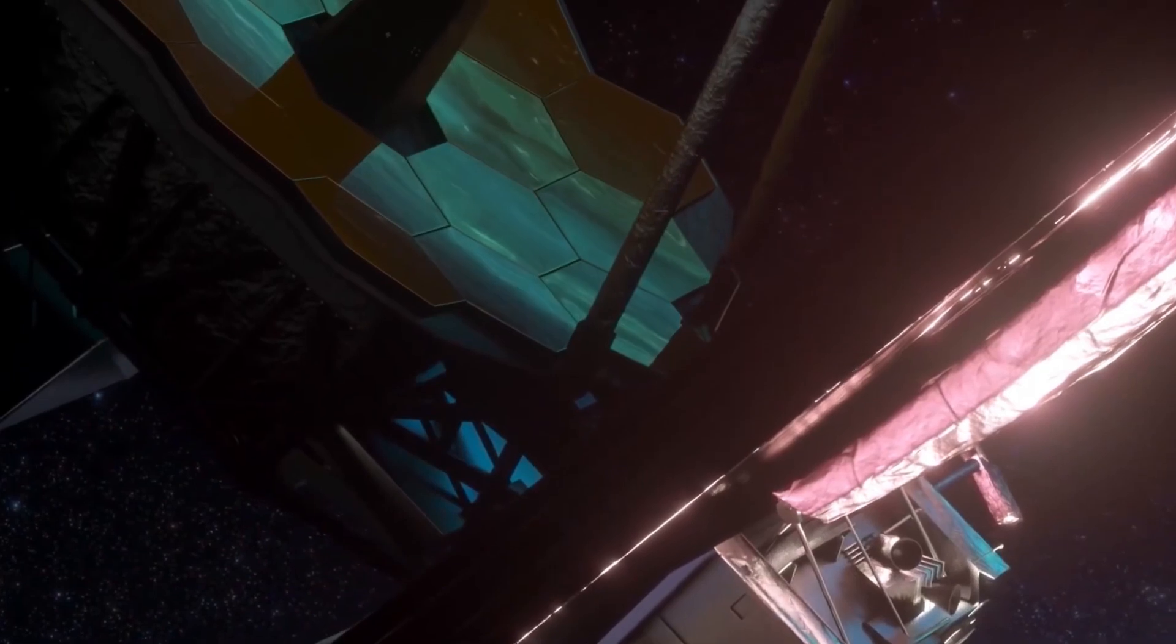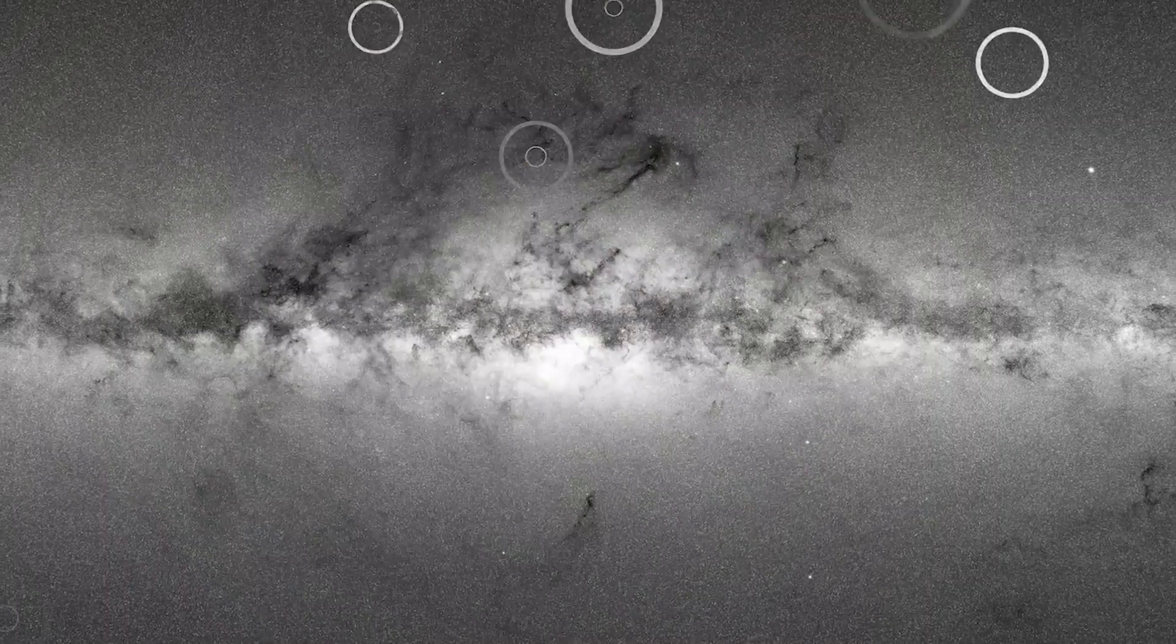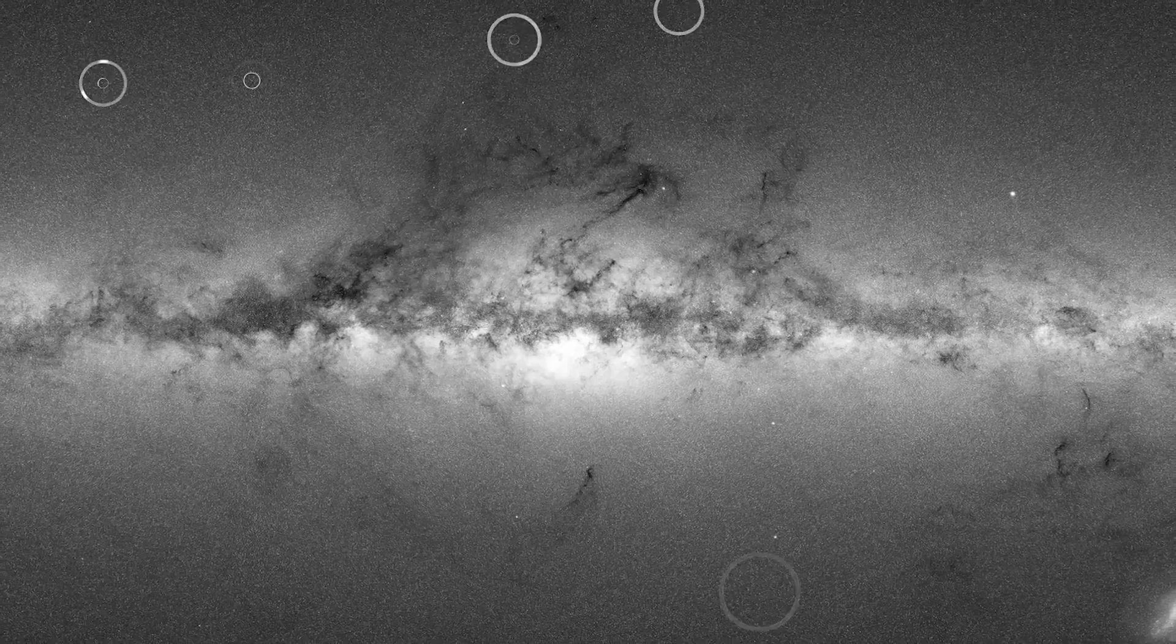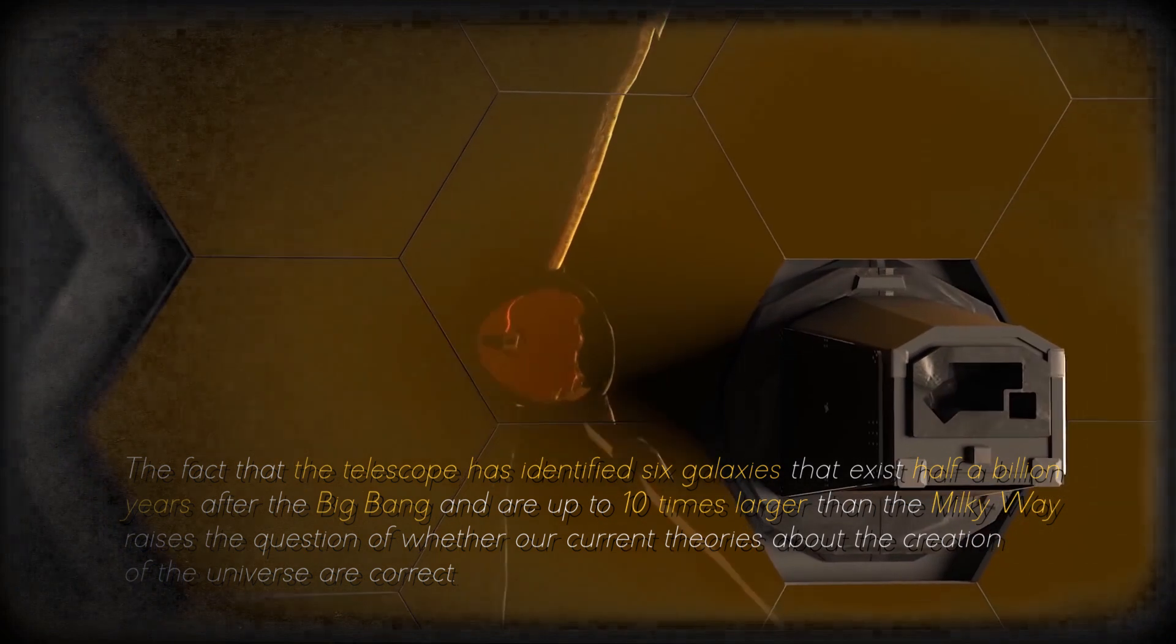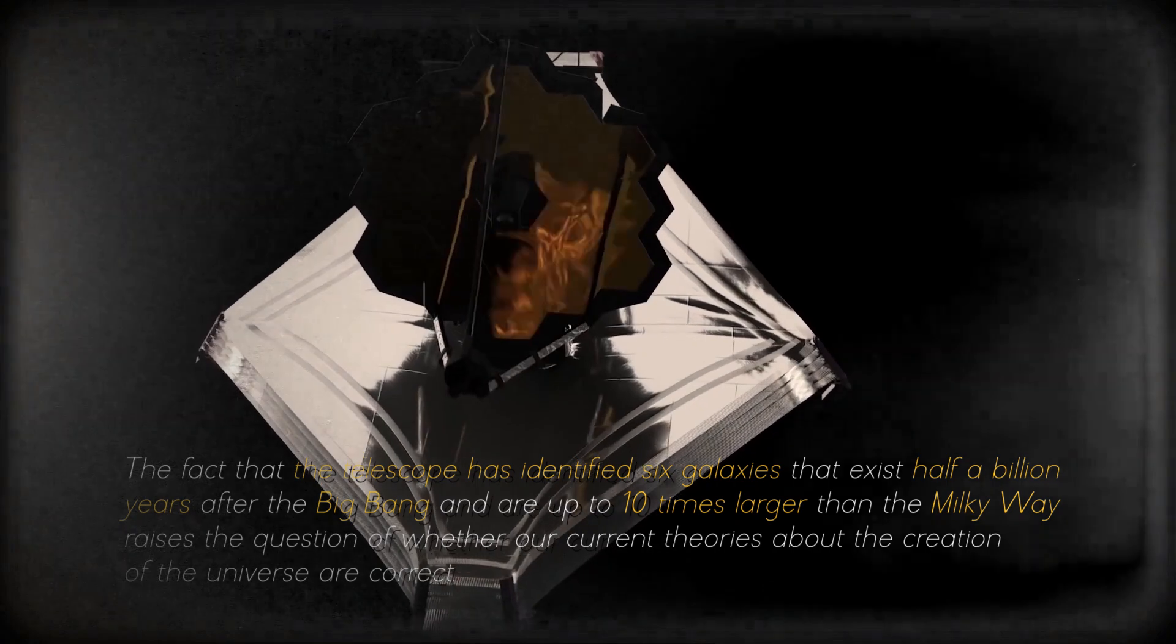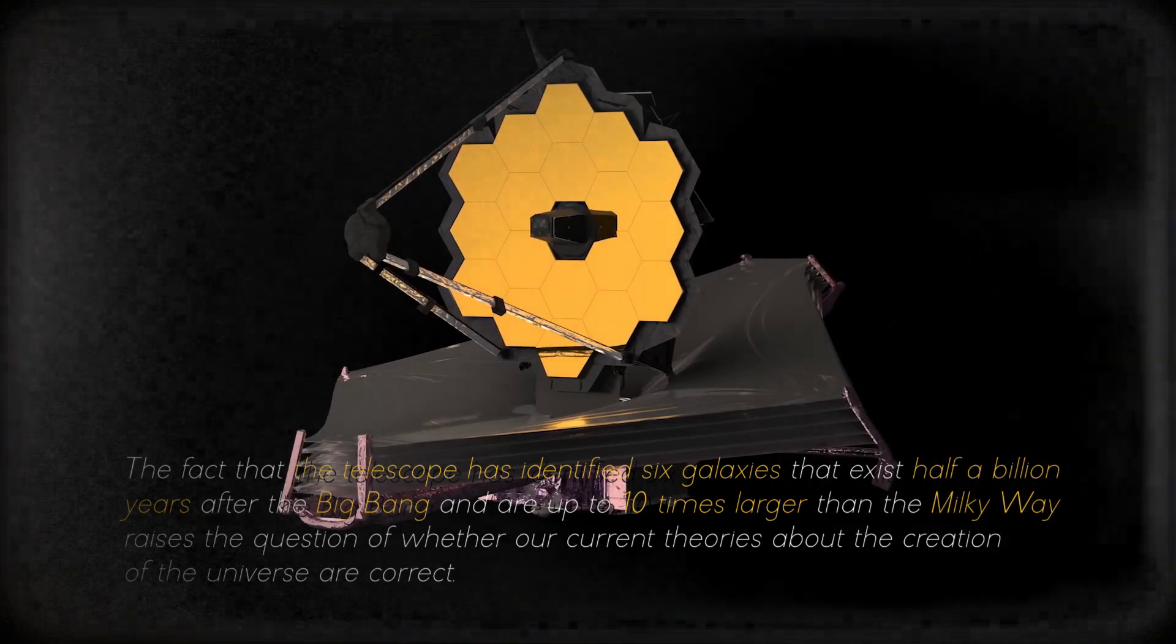According to theoretical physicist Michio Kaku, the discovery of ancient galaxies by the James Webb Space Telescope has called into question everything we knew about the beginning of the universe. Previously, these galaxies were thought to be less developed than the Milky Way, but the new findings suggest that we may be missing crucial information. The fact that the telescope has identified six galaxies that exist half a billion years after the Big Bang and are up to ten times larger than the Milky Way raises the question of whether our current theories about the creation of the universe are correct.